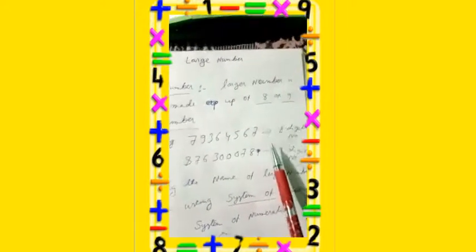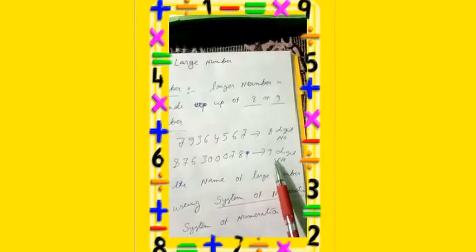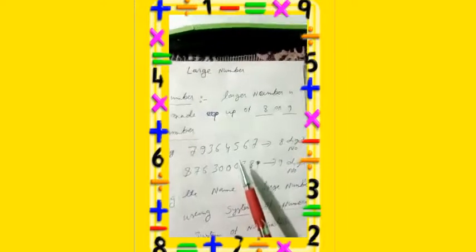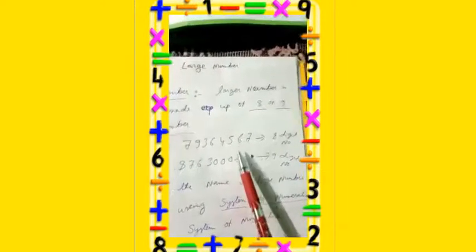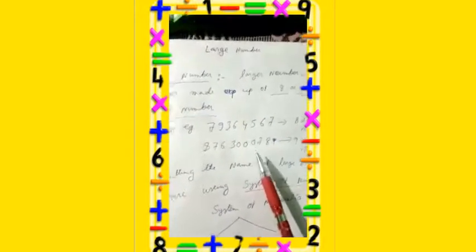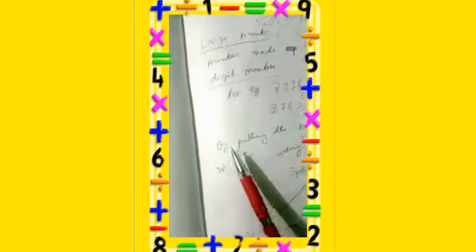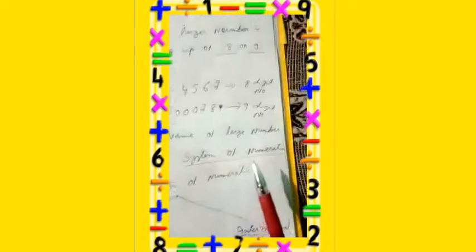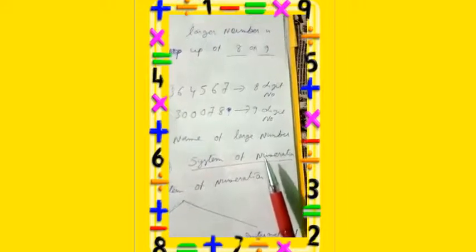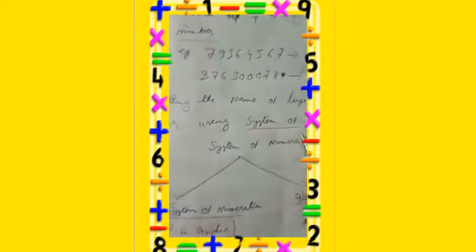Those 8-digit or 9-digit numbers as a whole are called large numbers. Now, what is the name of these numbers? We have to give some name to this number. For that, you should know some technique — that is the system of numeration. System of numeration is a system for giving the name of the digits.